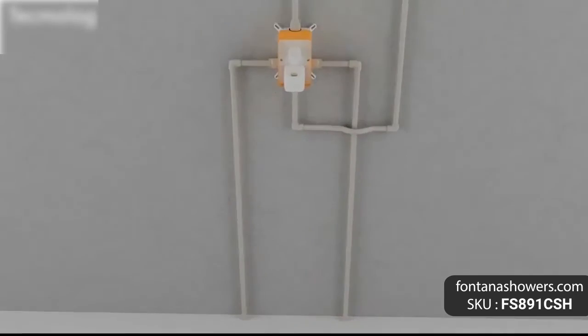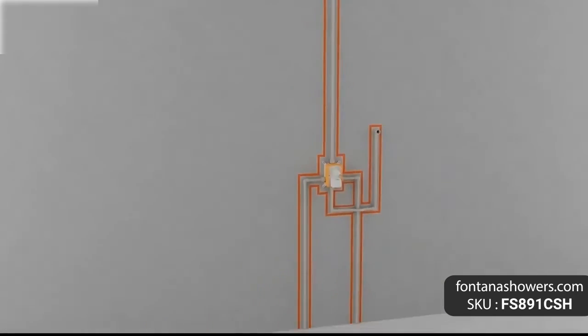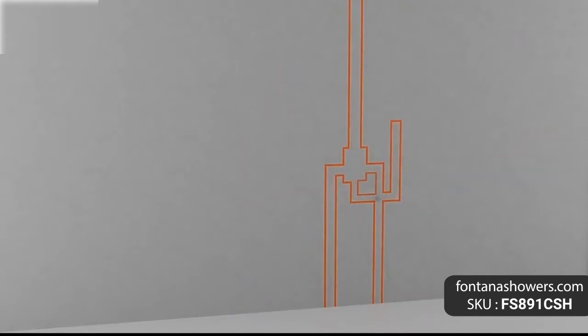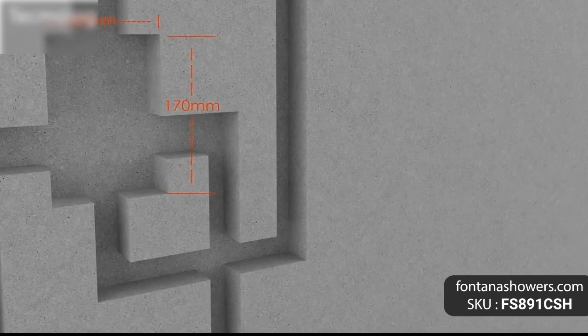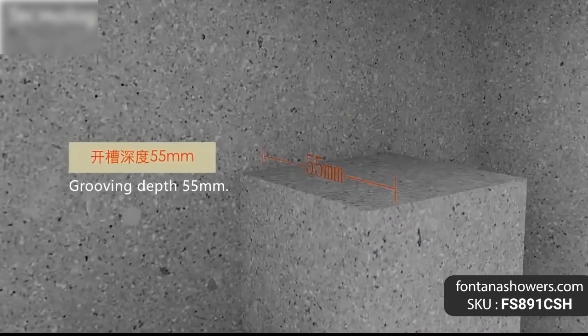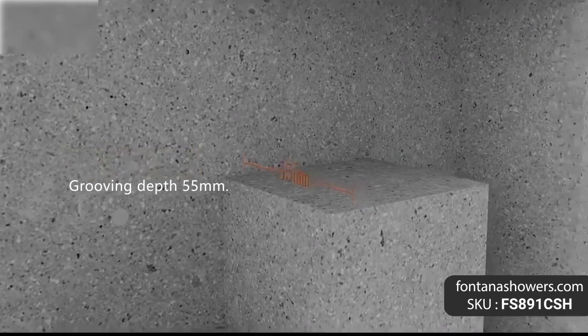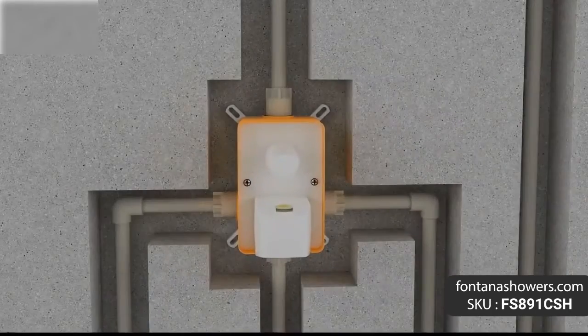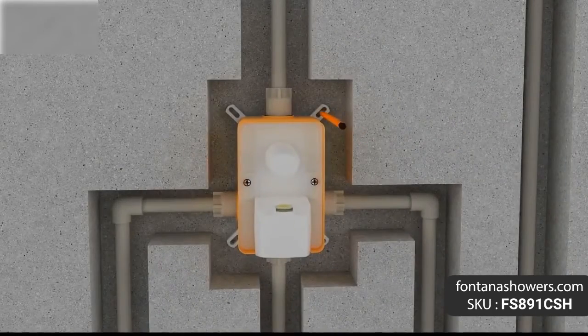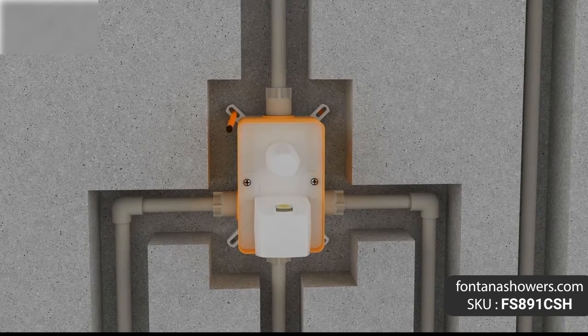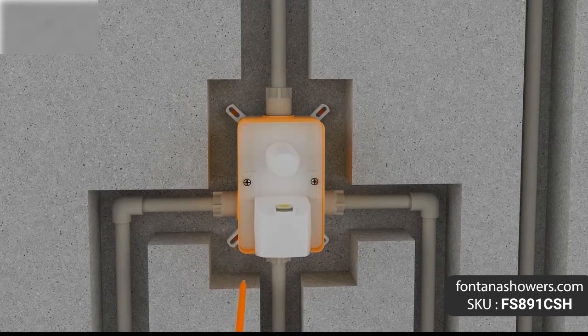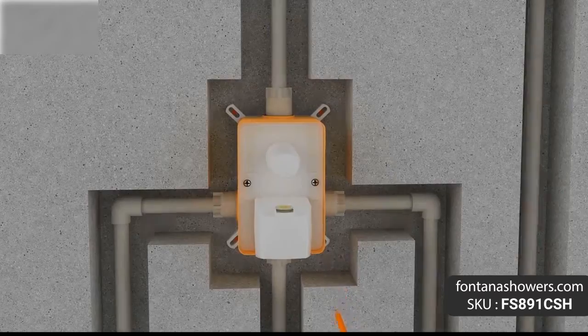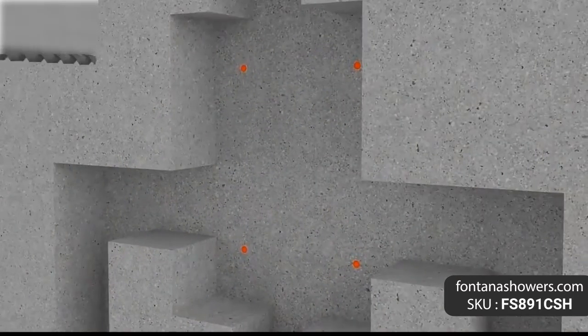Moselle single-handle shower set features: type shower set, features hand shower included, rain shower, installation type shower system, installation holes four holes, number of handles single-handle, finish chrome, style contemporary, flow rate 2.5 GPM (9.46 L/min).